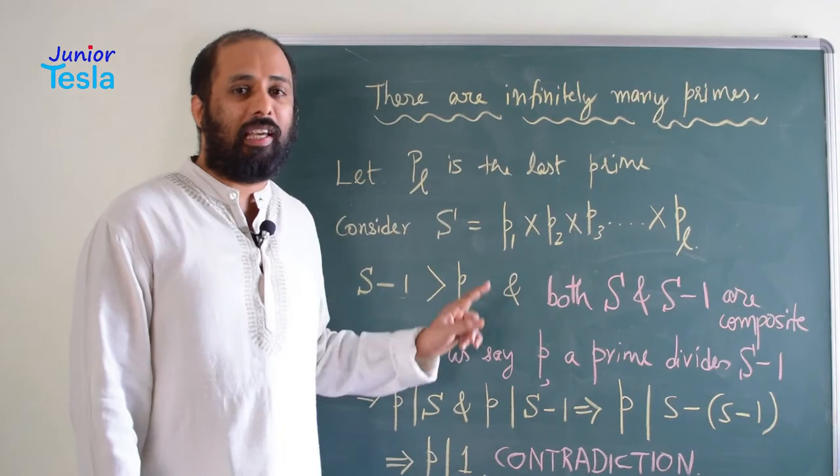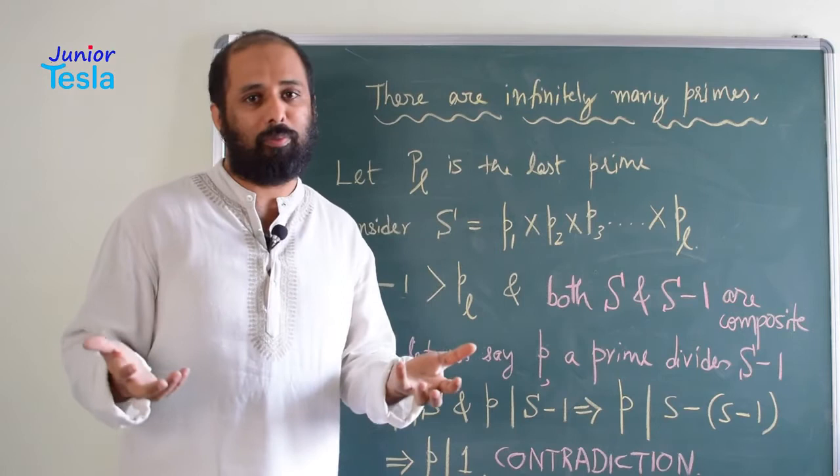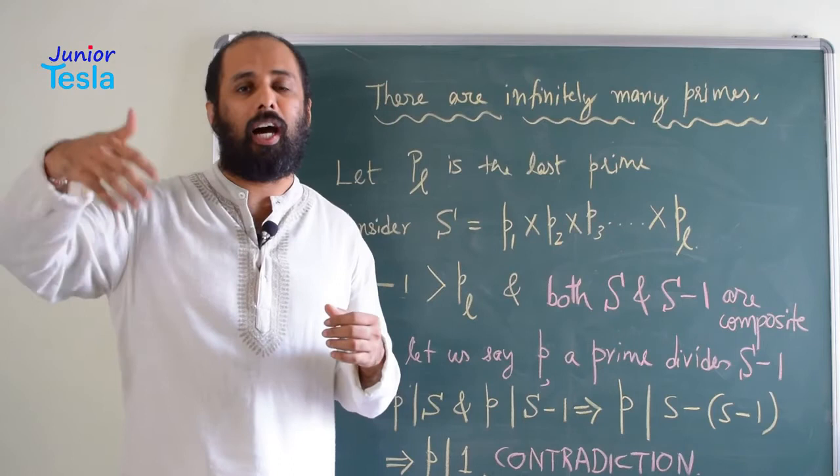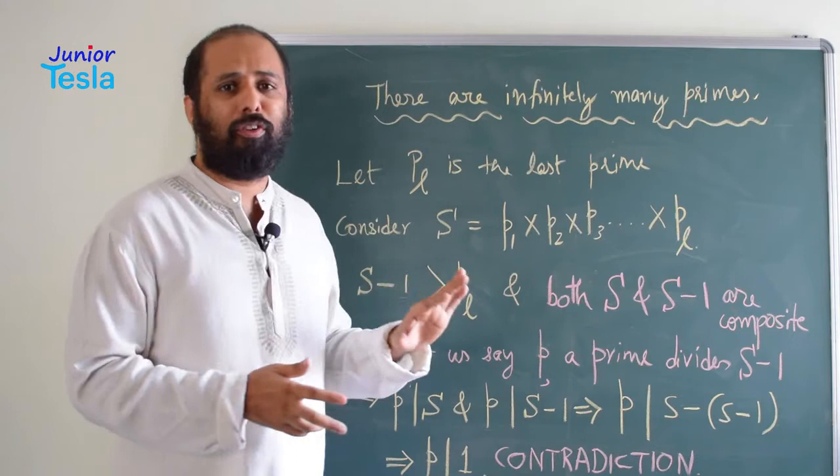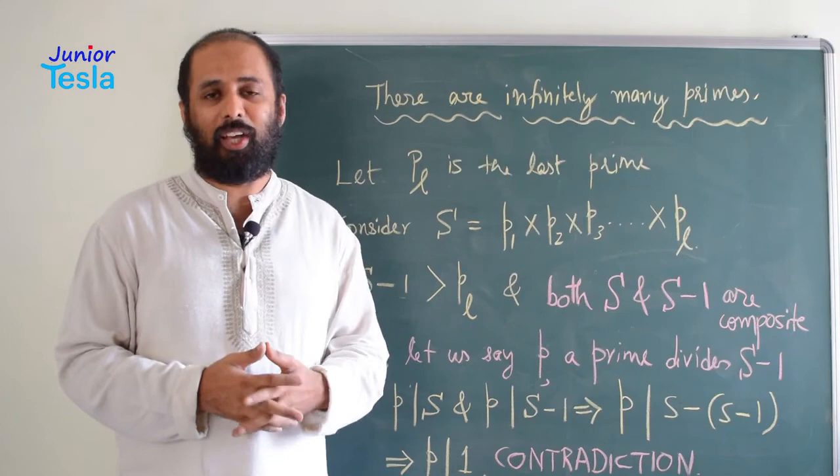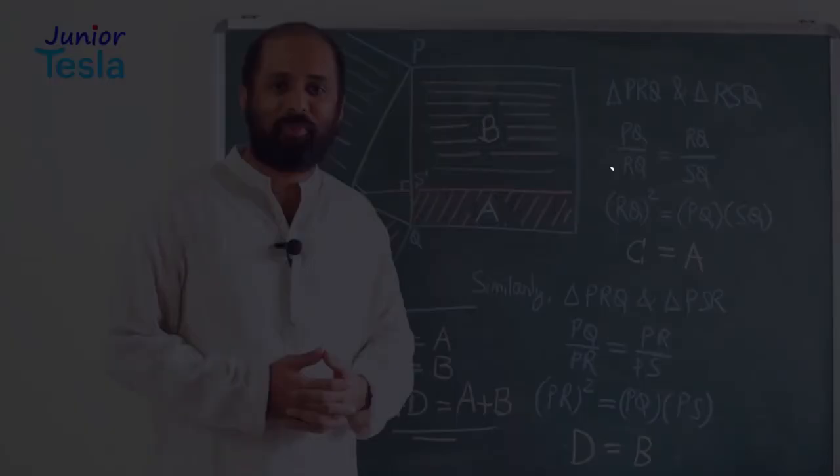Therefore, we say there are no finite prime numbers. There are infinitely many prime numbers. You cannot find the last prime number. Every time you find a prime number, there is one more prime number after it. So there are infinitely many prime numbers. This is a very beautiful proof given by Kummer to prove that there are infinitely many prime numbers.